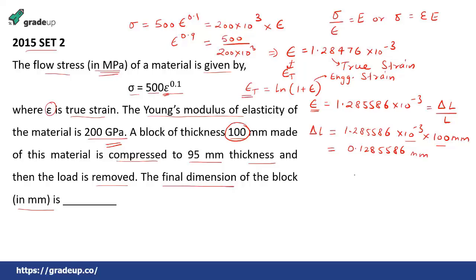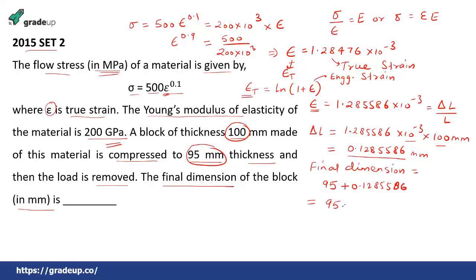The final dimension equals the compressed dimension of 95 mm plus the elastic recovery of 0.1285586 mm. So the final answer is 95.1285586 mm — that is the final dimension of the block.